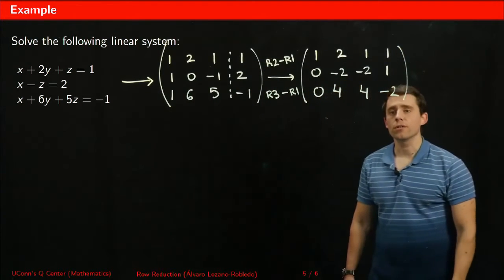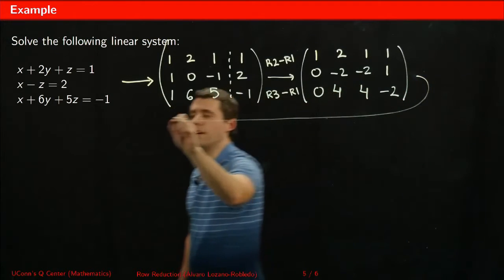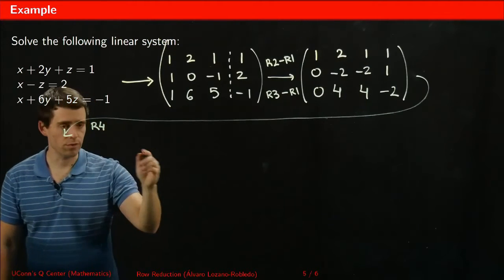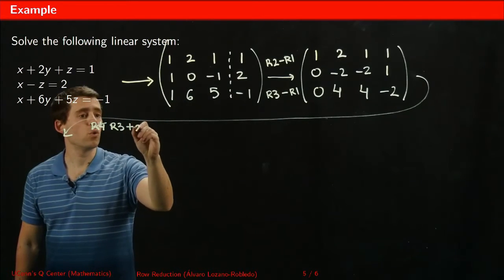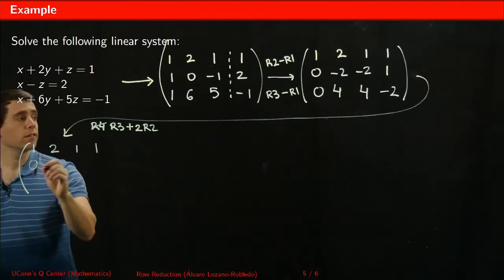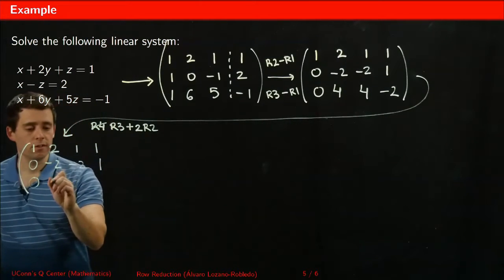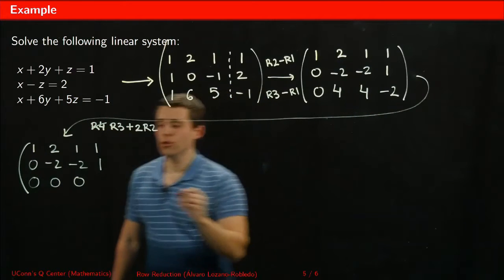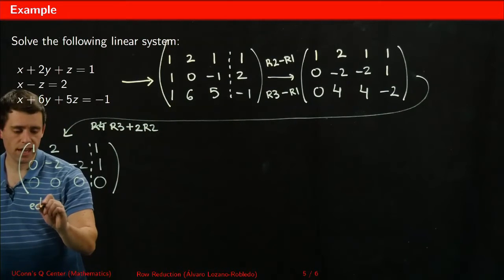Continuing, I replace the third row by the third row minus twice the second row. The first and second rows are untouched: 1, 2, 1, 1 and 0, minus 2, minus 2, 1. For the third row: 0, 0, 4 plus twice negative 2 equals 0, and minus 2 plus 2 equals 0. So the third row becomes all zeros.